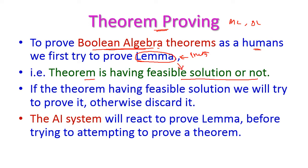If the theorem has a feasible solution, then only the human will try to prove it; otherwise the human will discard it, because we have intelligence. Similarly, the artificial intelligence system will first try to identify the lemma of the theorem. If there is a lemma, then only it attempts to prove the theorem; otherwise it will simply discard it from the beginning.